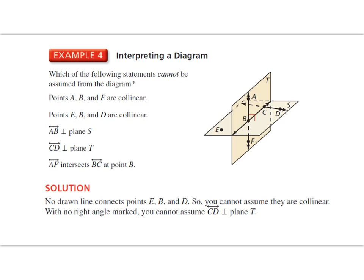All right. So it looks like there's only two of these statements that we could not conclude to be true. We could not assume them to be true. And that was points E, B, and D collinear. Since there's no line drawn connecting E, B, and D, we cannot assume they are collinear.